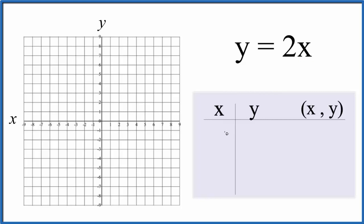So for x, let's start out with 0. That's always a good one. 2 times 0, that means that y will be equal to 0.